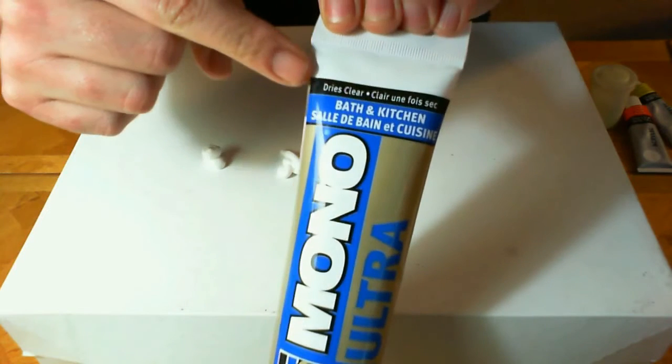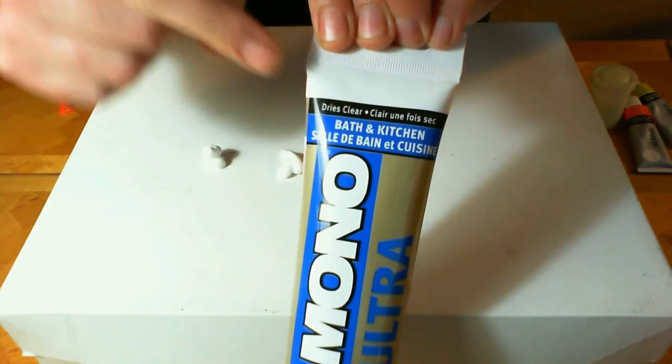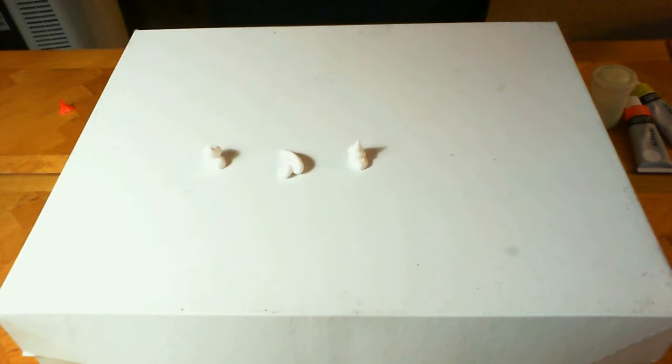So now that I have three globs of this, it's the bath-and-kitchen silicone. Dries clear. That's the important part right there. If you're purchasing silicone, make sure it dries clear. I'm using it mainly because I happen to have it. I didn't go out and purchase anything special.